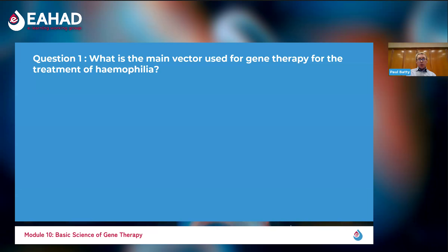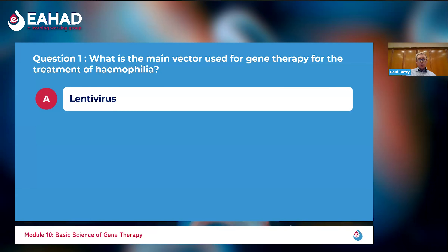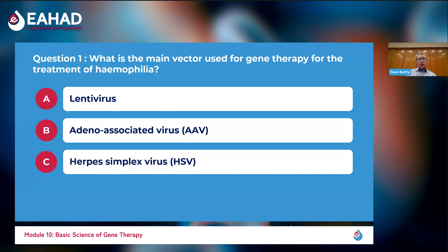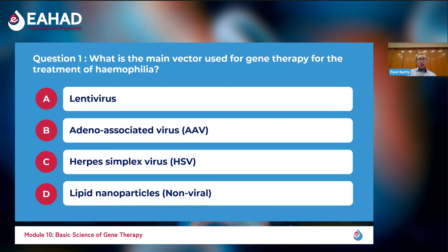Question 1: What is the main vector used for gene therapy for the treatment of haemophilia? Is it number 1, lentivirus; number 2, adeno-associated virus; number 3, herpes simplex virus; or number 4, a non-viral approach using lipid nanoparticles? The correct answer is adeno-associated virus.